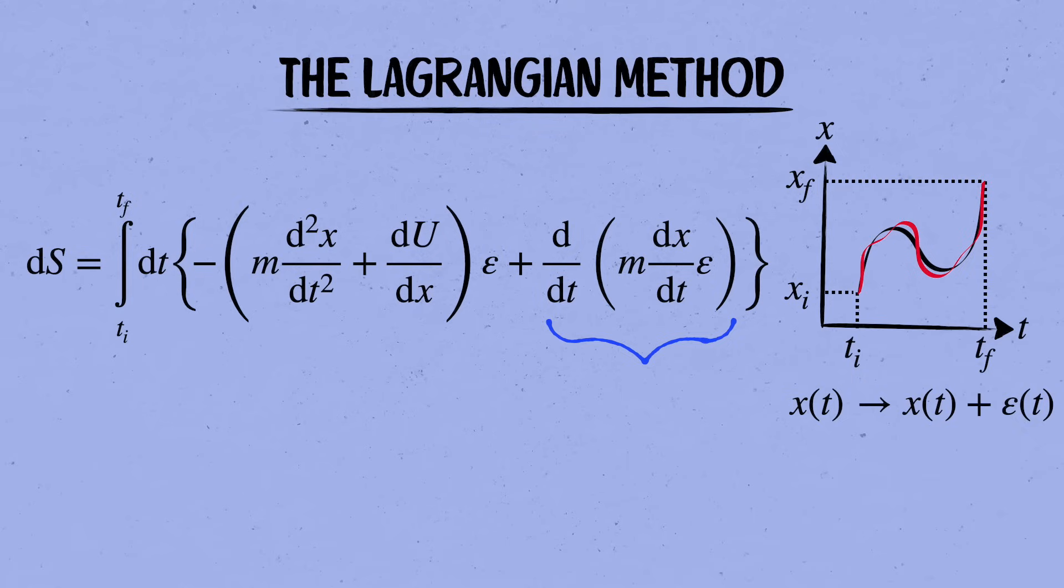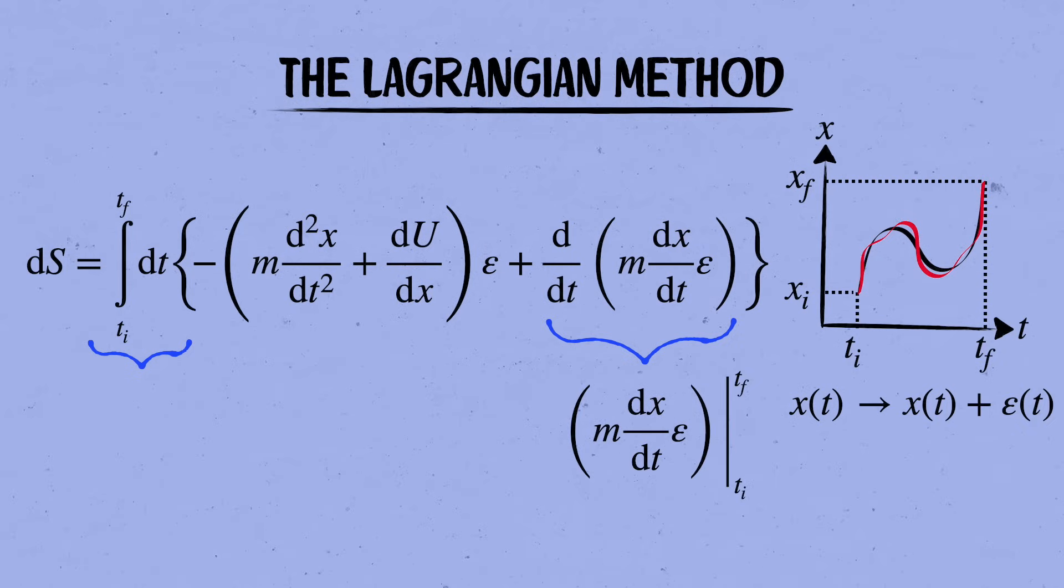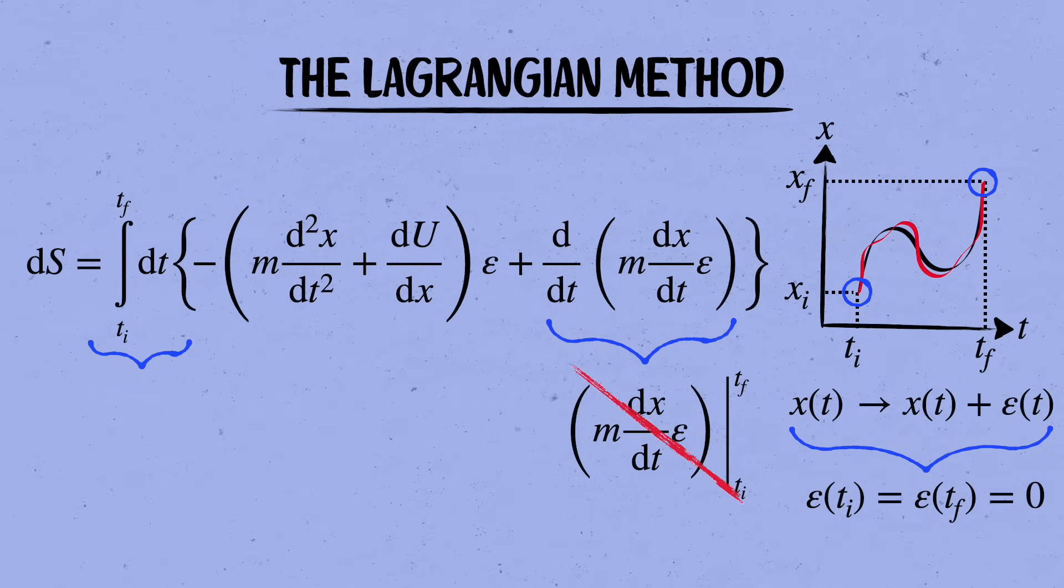This is what we want to vanish in order to find a minimum of the action. The second term is easy, so let's deal with that first. It's the integral of a derivative. So all we're going to get is the difference of the thing in parentheses between the two endpoints, tf and ti. But this is zero. The reason is that we're not allowing just any variation epsilon of t here. We're looking at variations of the path connecting this initial point to this final point, and so we don't want the deformation to change the endpoints of the curve. That means that we require epsilon to vanish at ti and tf, and so this contribution to the change in the action is just zero.